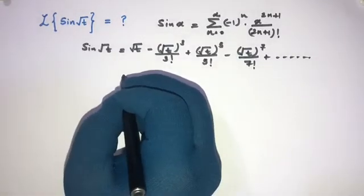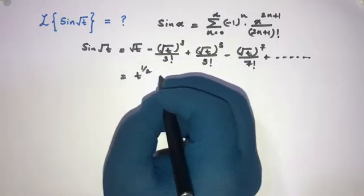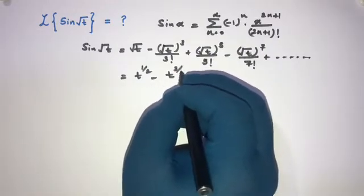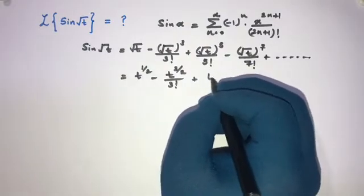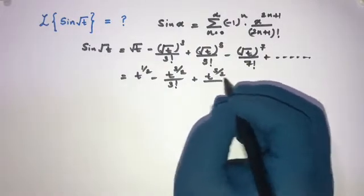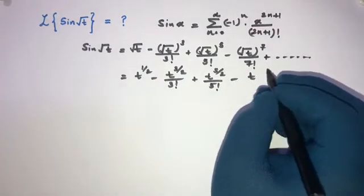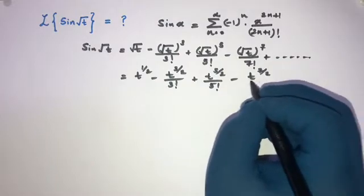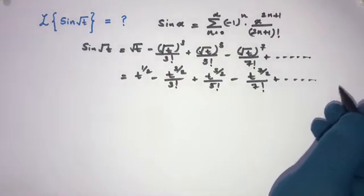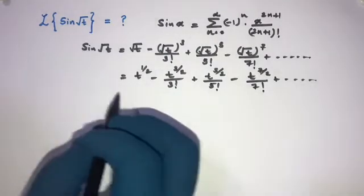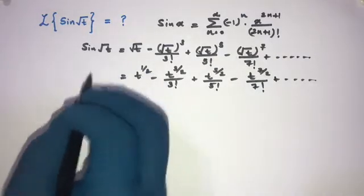Now we can rewrite this using fractional exponents: sine(√t) = t^(1/2) minus t^(3/2) over 3! plus t^(5/2) over 5! minus t^(7/2) over 7! plus so on. Now we can take the Laplace transform of sine(√t).